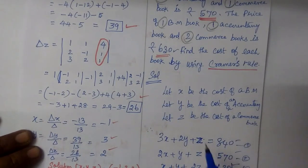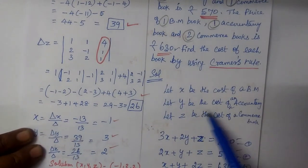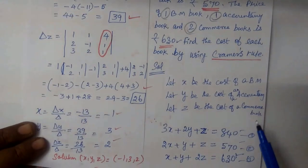Find the cost of each book using Cramer's rule. So, let x be the cost of business math, y be the cost of accountancy, z be the cost of commerce book.